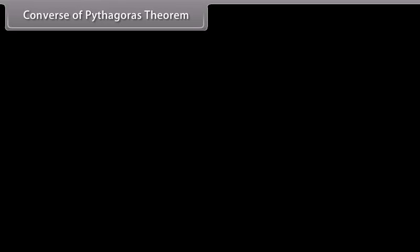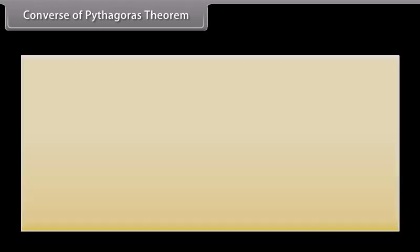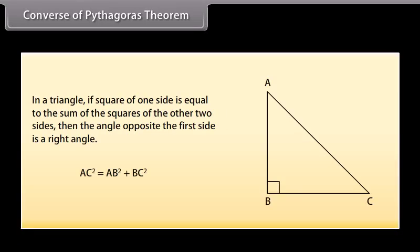Converse of Pythagoras theorem: In a triangle, if the square of one side is equal to the sum of the squares of the other two sides, then the angle opposite the first side is a right angle.